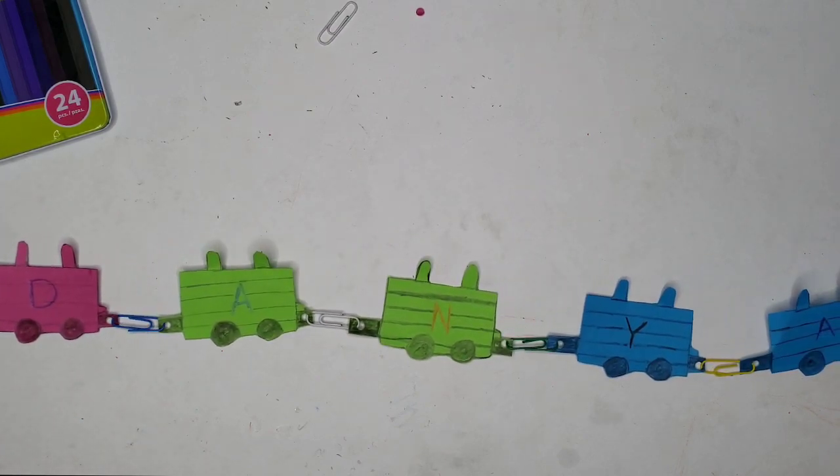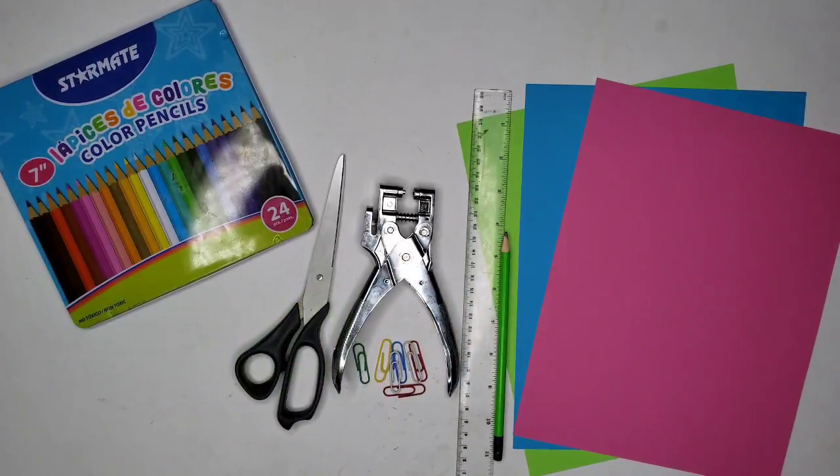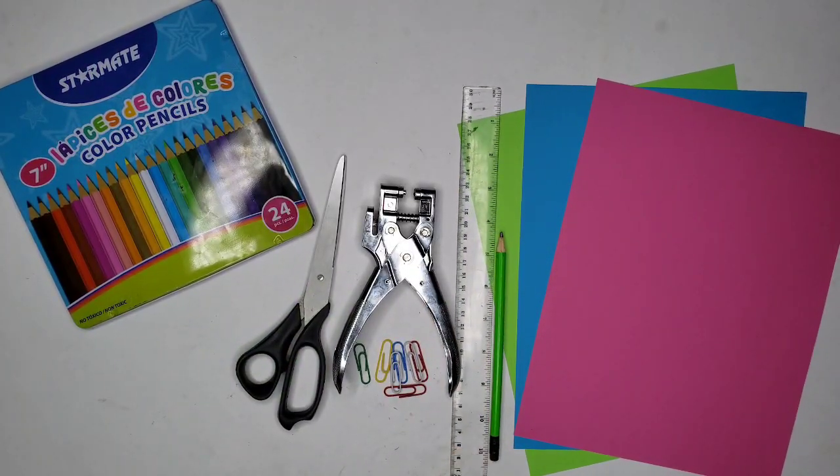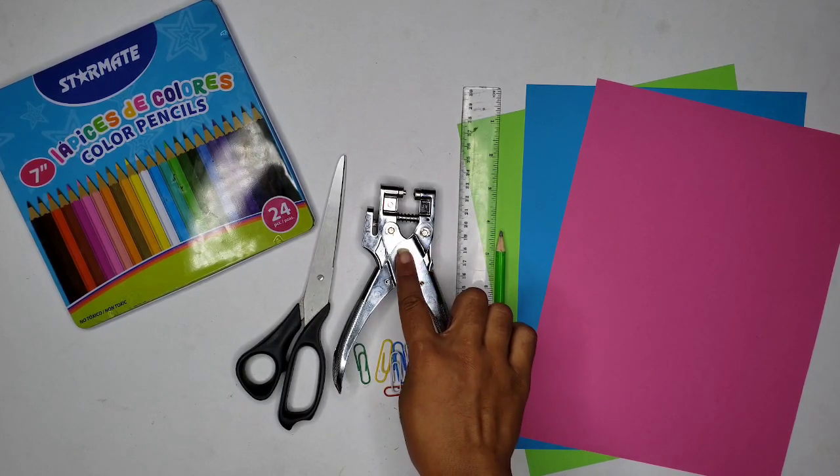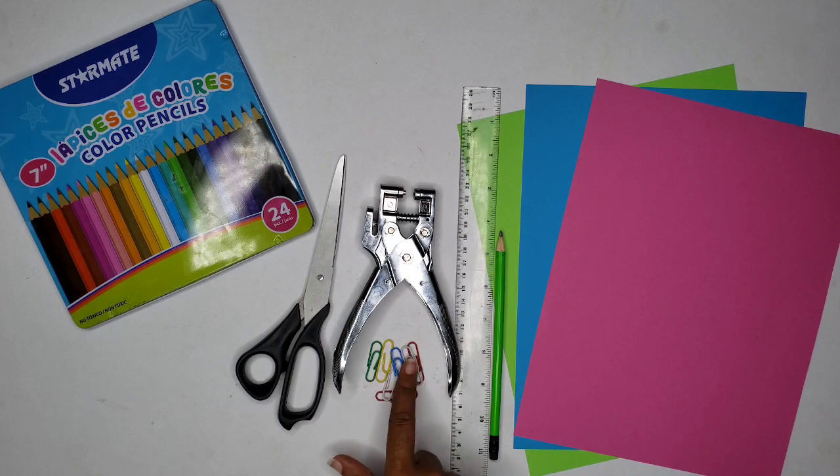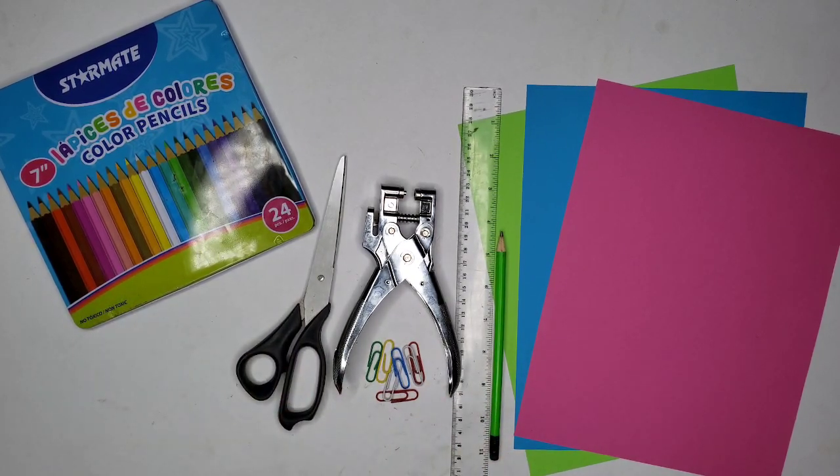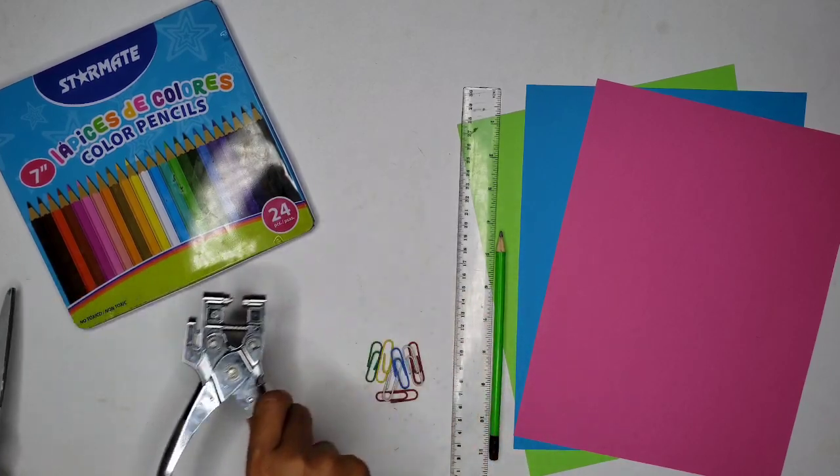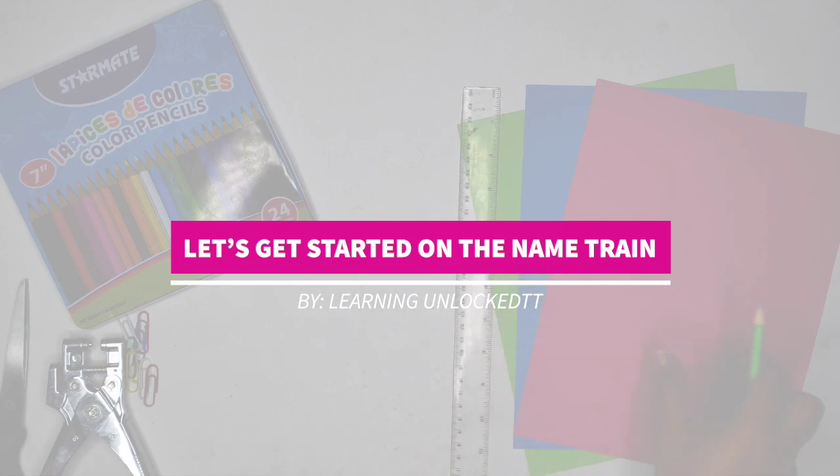This name craft will also help hone their fine motor skills and it's pretty quick and simple to do. All you will need is three sheets of bristol board of assorted colors, a pencil, a ruler, a paper punch, some paper clips, a scissor, and some crayons or color pencils to add a little bit of color and dimension to your craft. So let's get started.